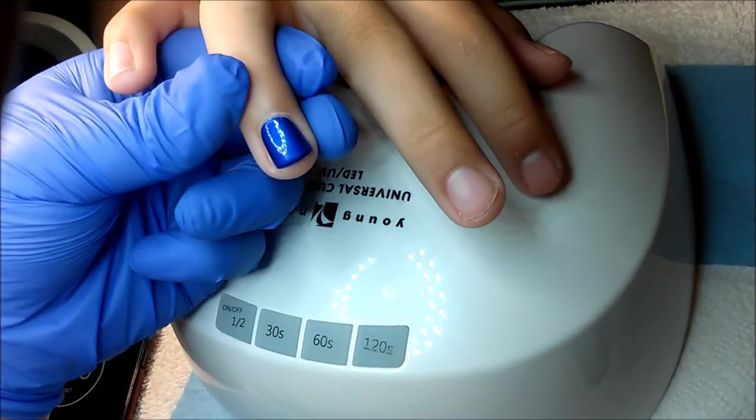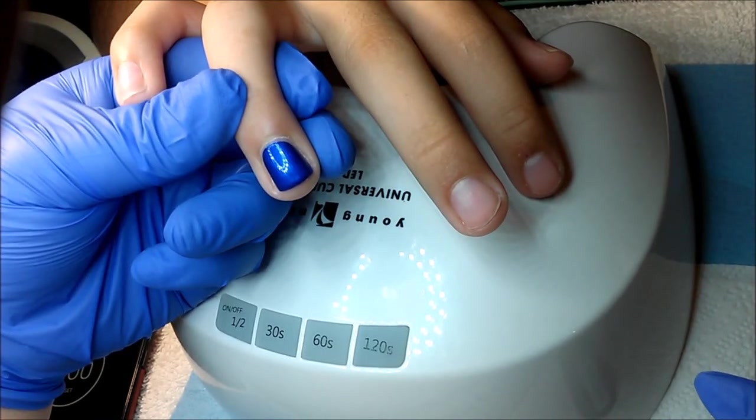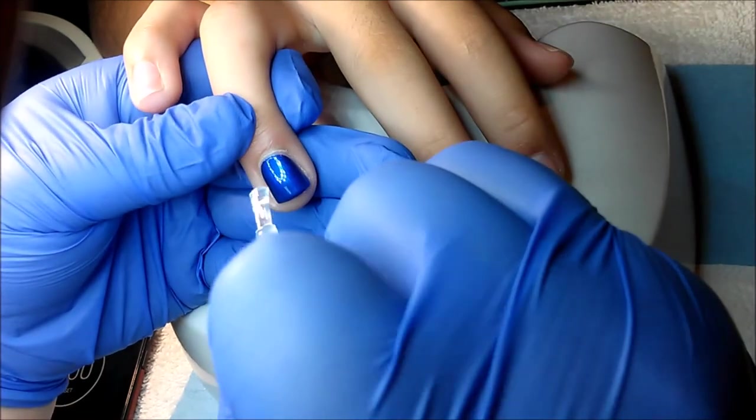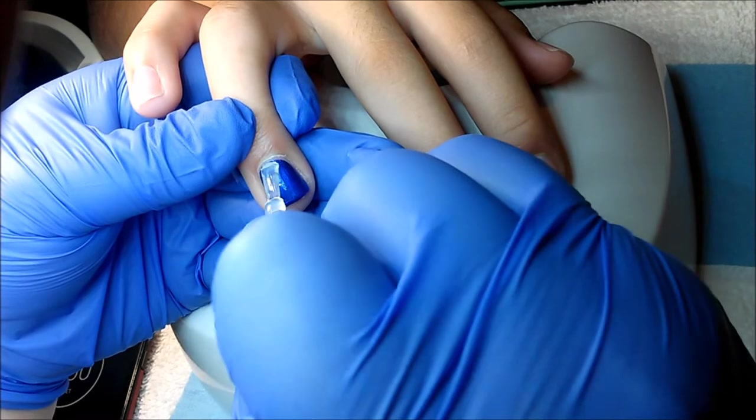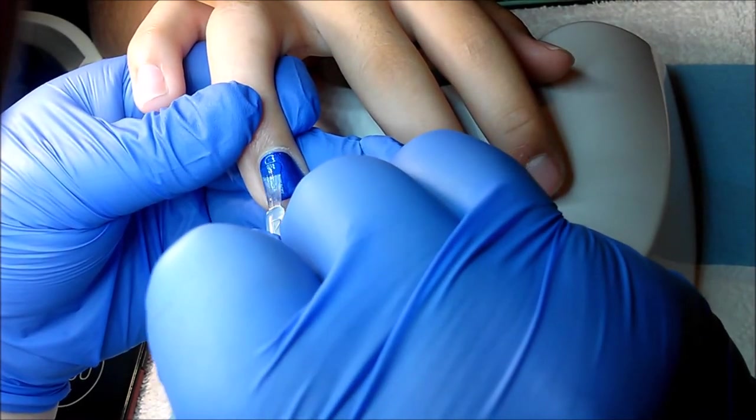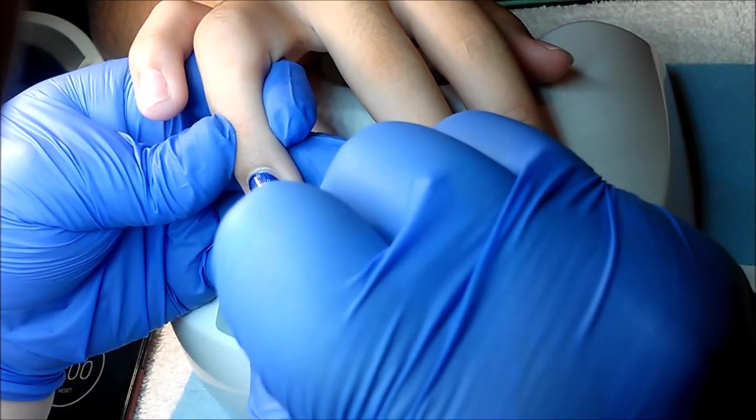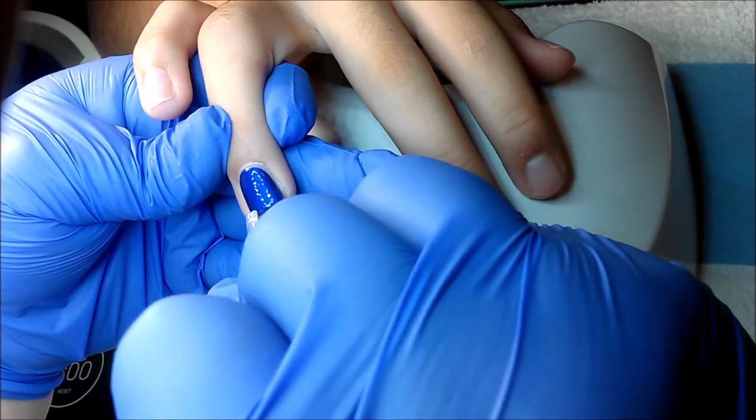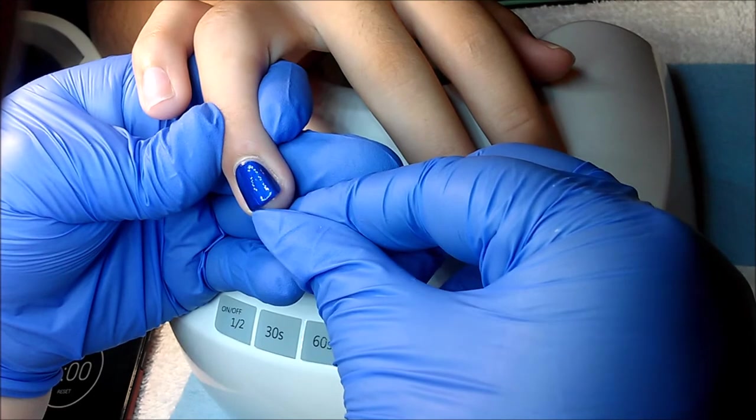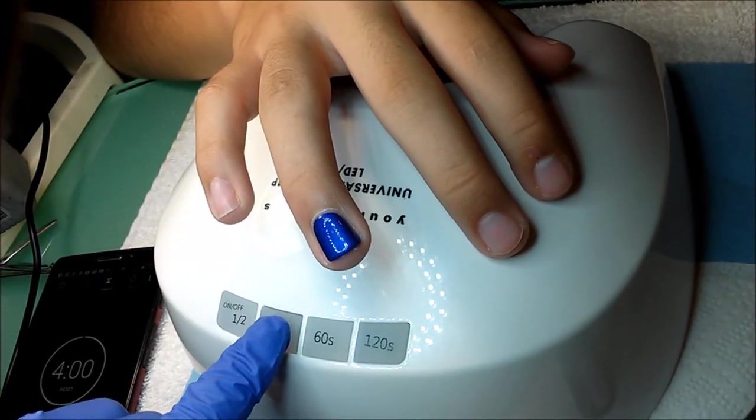This top coat is so shiny. I've actually started using it with other things as well, like over acrylic or builder gel sets. And it does have an inhibition layer, but I mean, that's not a problem. It's so shiny that it's worth having to wipe off an inhibition layer as opposed to using a non-wiped top coat. It is just so clear. It's amazing quality, and I love this stuff. And again, cure for 30 seconds.